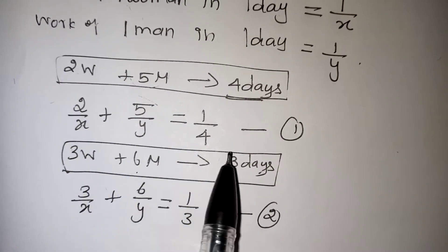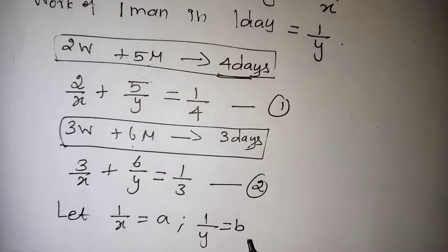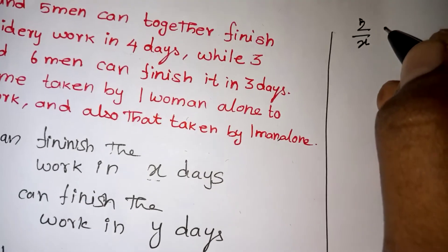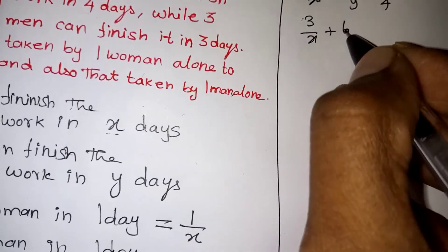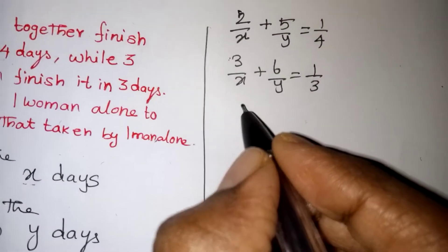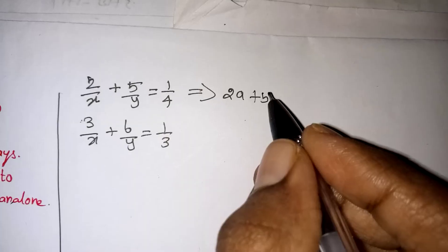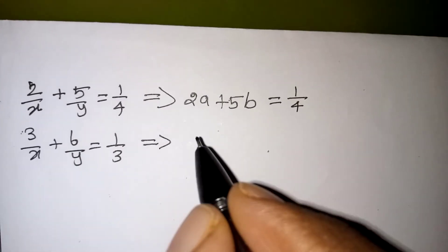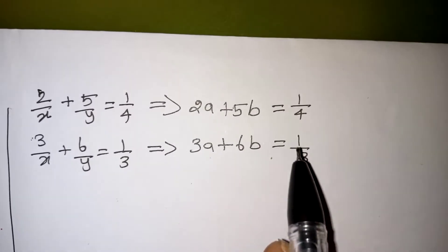Here all the variables are in the denominator, so we substitute to simplify. Let 1 by x equal to a, and 1 by y equal to b. Now substituting, equation 1 becomes 2a + 5b = 1/4, and equation 2 becomes 3a + 6b = 1/3.